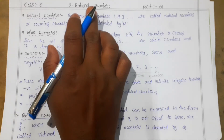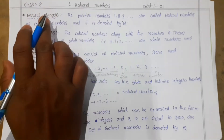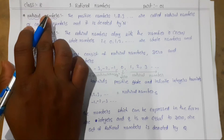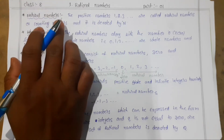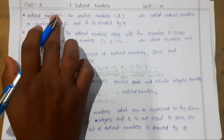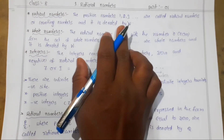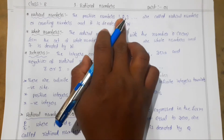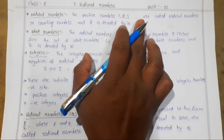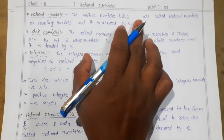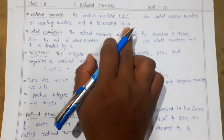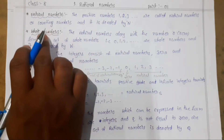Before going to discuss about rational numbers, let us recall what we learned about the number system in the previous classes. In the previous classes you might have learned about the natural numbers. We know that natural numbers are also called counting numbers, and they are denoted by N. All the positive numbers — 1, 2, 3, and so on — are called natural numbers or counting numbers.